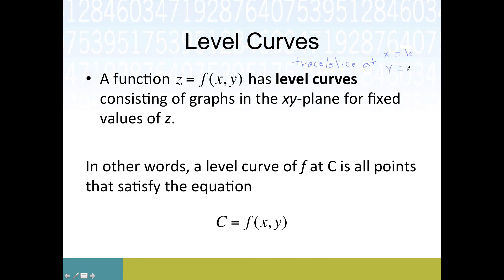A level curve talks about a fixed output value. We can also talk about a trace or slice at some fixed x value or y value. Using the cost analogy, instead of a fixed budget we might fix the production level of one product and see how cost varies as we change production of the other. A trace or slice at x equals some fixed value, or y equals a fixed value, gives the same kind of reduction.